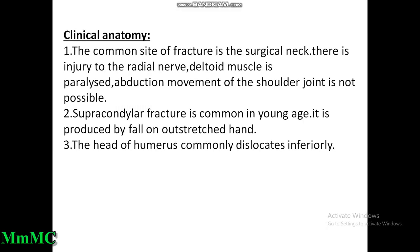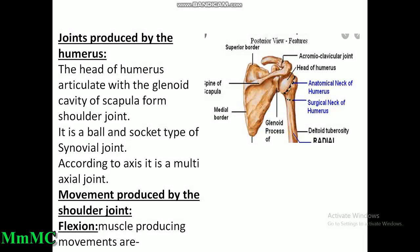Clinical anatomy: the common site of fracture is the surgical neck. There is injury to the radial nerve; behind the surgical neck the axillary nerve is related — if the surgical neck is fractured, the axillary nerve is injured and the deltoid muscle is paralyzed, so abduction movement of the shoulder joint is not possible. Supracondylar fracture is common in young age, produced by fall on outstretched hand. The head of the humerus commonly dislocates inferiorly.